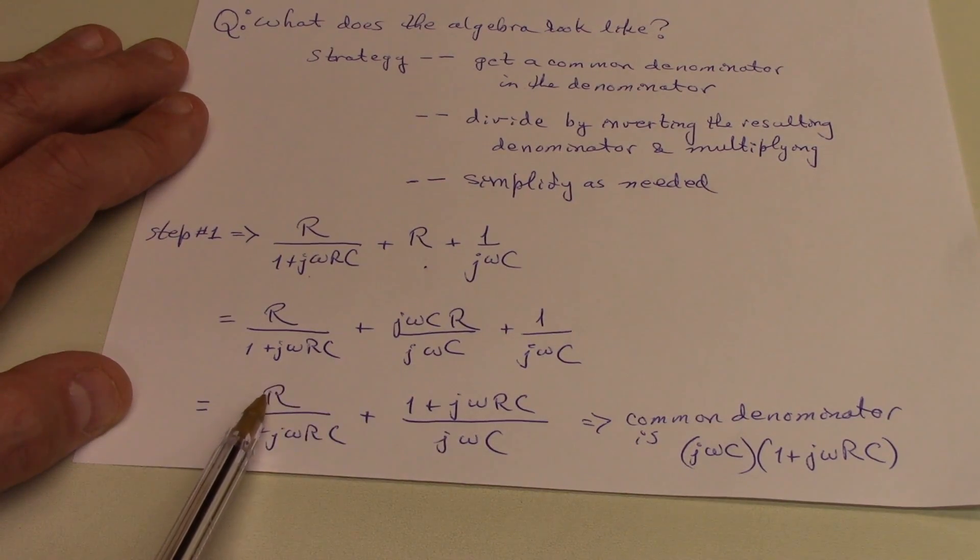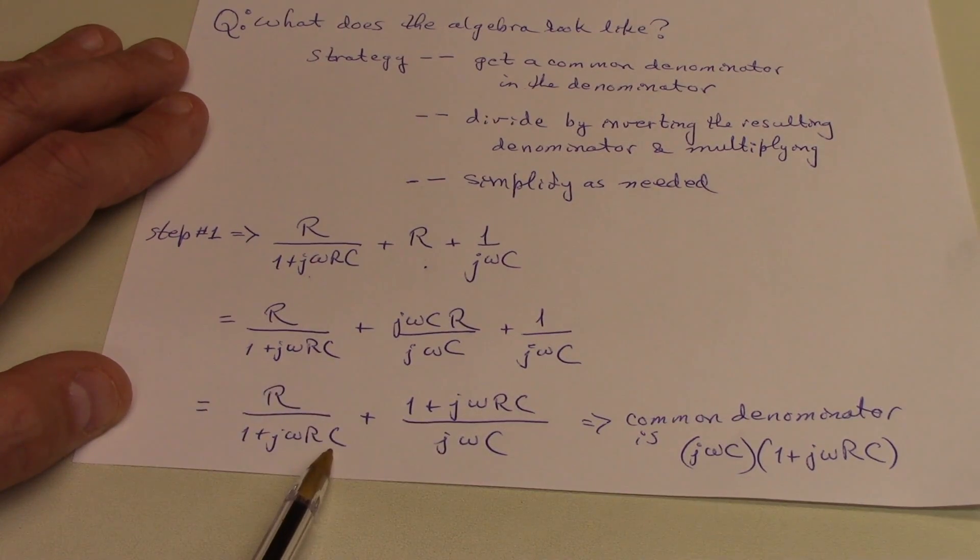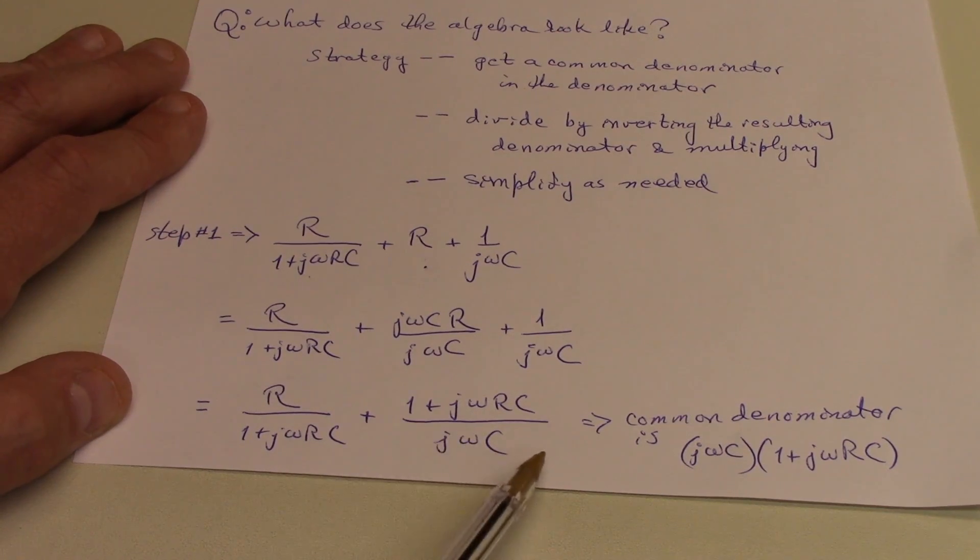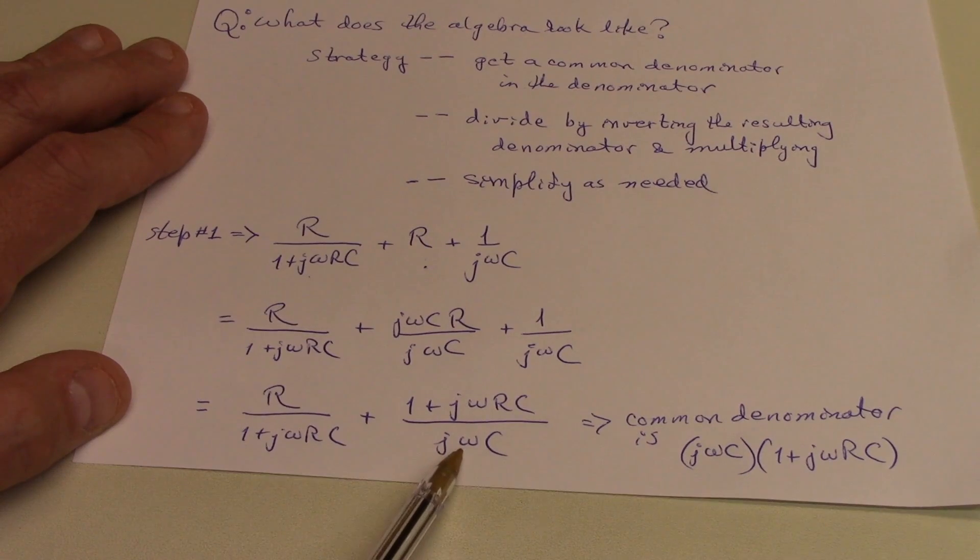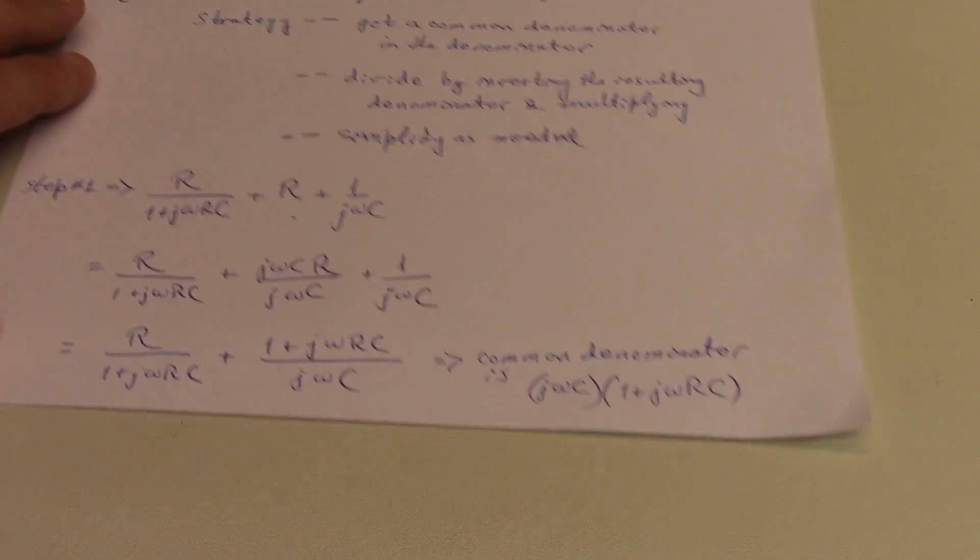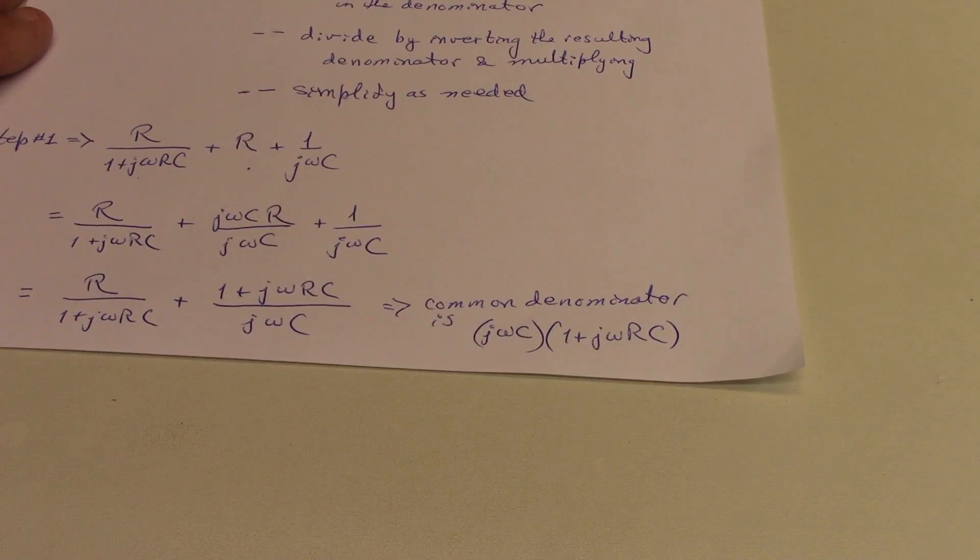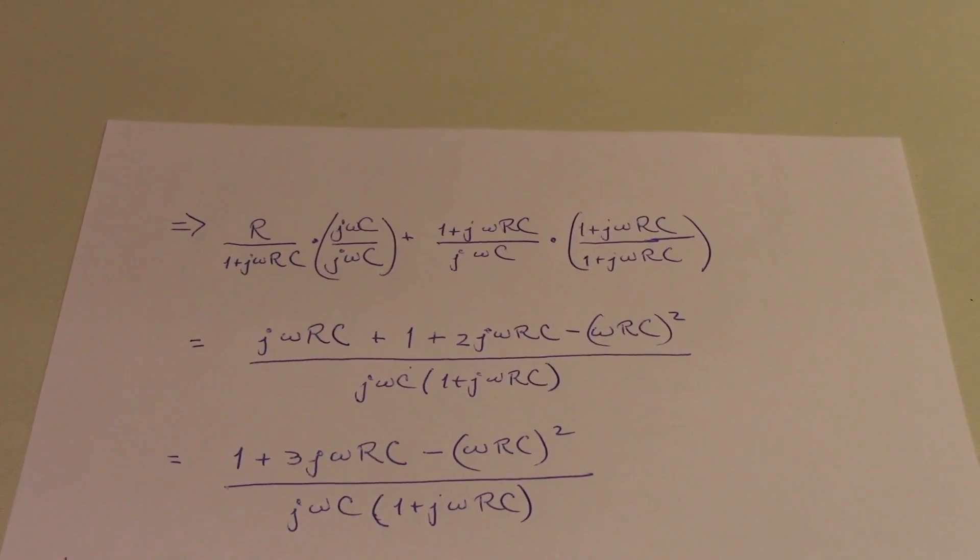And then when I add that to r over 1 plus j omega rc, it then becomes pretty obvious what the common denominator is. It's just going to be j omega c times 1 plus j omega rc. So the common denominator is going to be that.